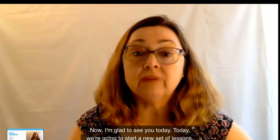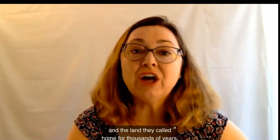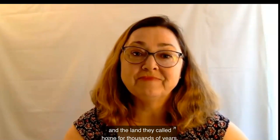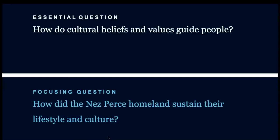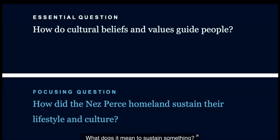A new set of lessons. We've been studying how the United States Westward Expansion impacted Native Americans who lived in the West, and now we're going to focus our attention on one specific tribe, the Nez Perce. We're going to learn about their traditional culture, their ways of life, and the land they called home for thousands of years. The focusing question that will guide our study is: how did the Nez Perce homeland sustain their lifestyle and culture? What do we mean when we talk about a group's homeland? What does it mean to sustain something? Let's learn more about these two important words.